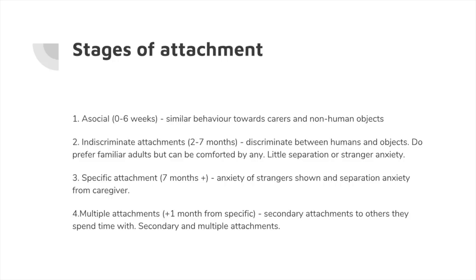After the seven-month period, they develop a specific attachment, showing preference for one primary caregiver — generally the mother — and showing stranger anxiety and separation anxiety. About a month after gaining that, they generally gain multiple attachments: to the father, but also brothers, sisters, aunties, uncles, grandparents, etc.